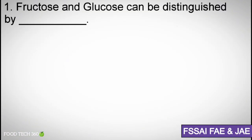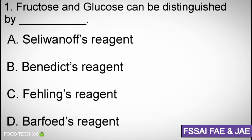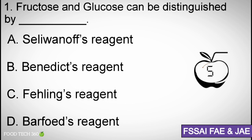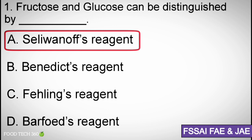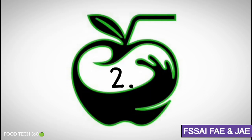Question number 1: Fructose and glucose can be distinguished by — A. Seliwanoff's reagent, B. Benedict's reagent, C. Fehling's reagent, D. Barfoed's reagent. Correct answer: A. Seliwanoff's reagent.